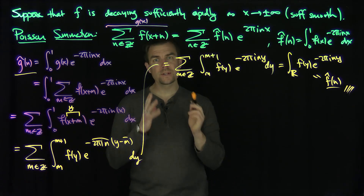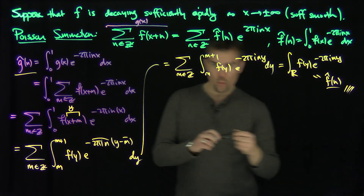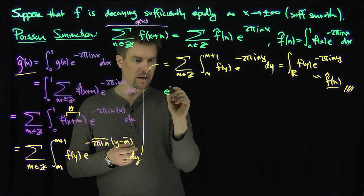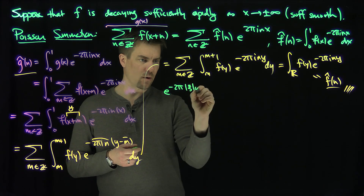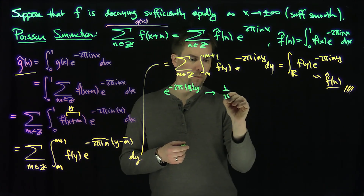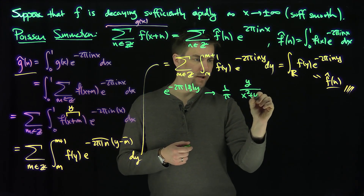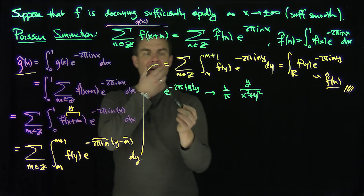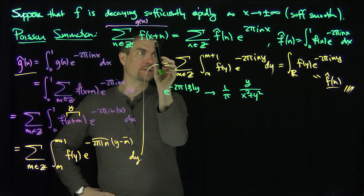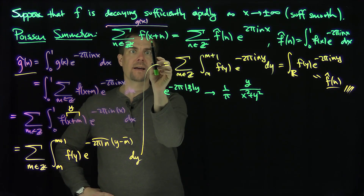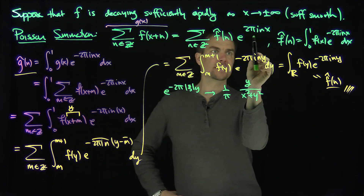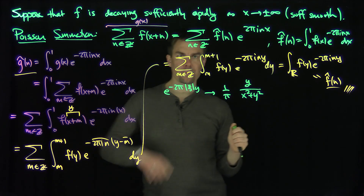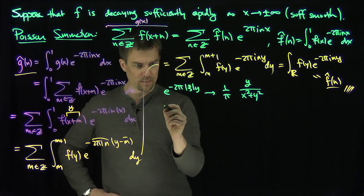Here's one of the quintessential examples of the Poisson summation formula. We know that e to the minus 2 pi x times y transforms to 1 over pi times y over (x squared plus y squared). One classic example is when we plug in x equals 0 to get a formula: the sum over n in Z of f-hat of n has to equal the sum of the Fourier coefficients. So by Poisson summation, replacing y with t, we can conclude the following.